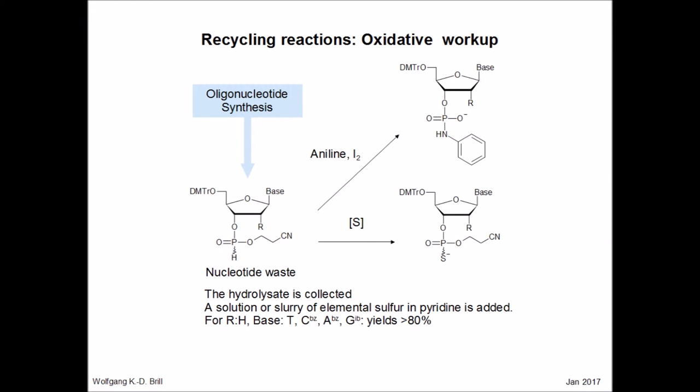Another option for the recycling of nucleosides is the oxidative workup of the phosphoramidite hydrolysates. When treated with an amine and iodine, they form nucleoside phosphoramidates. When treated with sulfur transfer reagents or elemental sulfur, phosphorothioate diesters are formed. The latter are versatile building blocks — they can be obtained in high yields and great purity.